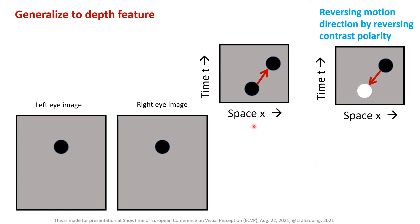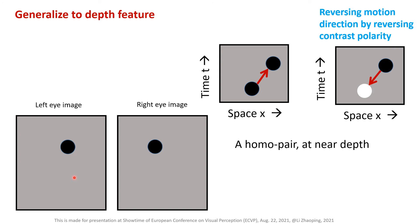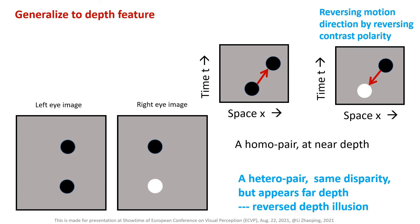Now let's generalize to the depth feature. Two dots at two different time instances are now two dots in two different eyes. If we give this binocular spatial disparity between them, this gives a black dot at a near depth plane — a homo pair of dots for a normal depth feature. However, without changing the binocular disparity, when a black dot in one eye corresponds to a white dot in the other eye, a near depth disparity can appear perceptually as far depth and vice versa in the peripheral visual field. This is the reverse depth illusion by hadal pairs of dots.